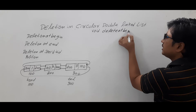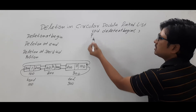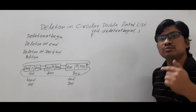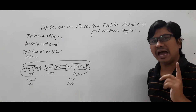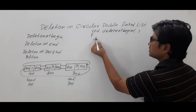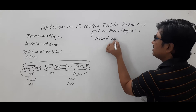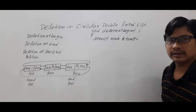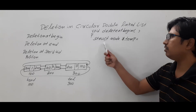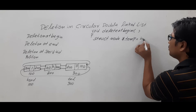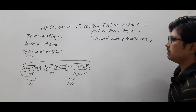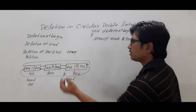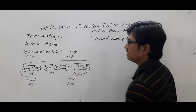The return type is void, meaning this function does not return any value. I will create a pointer called temp of struct node type, and assign whatever value is in head — which is currently 100. So we have created a pointer called temp and assigned the value in head, which is 100.